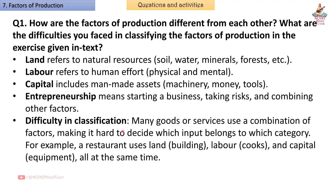Difficulty in classification: Many goods or services use a combination of factors, making it hard to decide which input belongs to which category. For example, a restaurant uses land, building, labor (cooks), and capital (equipment) all at the same time.